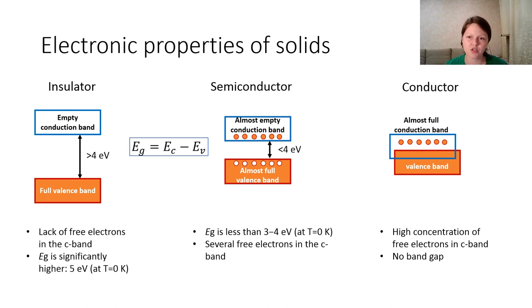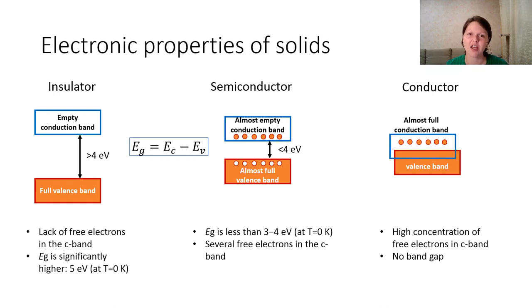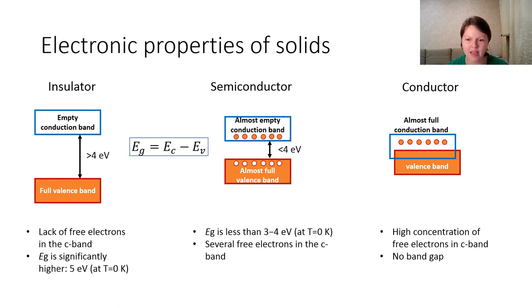What about conductors? Conductors have no band gap at all. The valence band and the conduction band of a conductor intersect each other, and the conduction band is almost full, providing a large number of free electrons. You can see here the three different types of band structures of these materials.